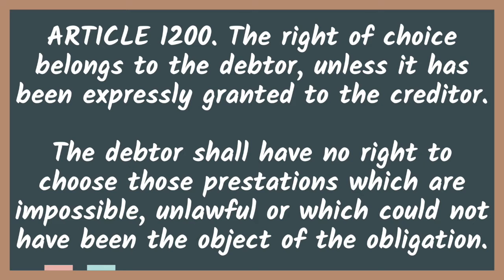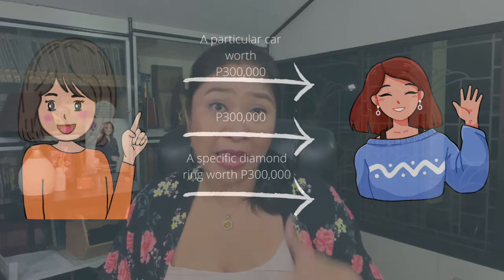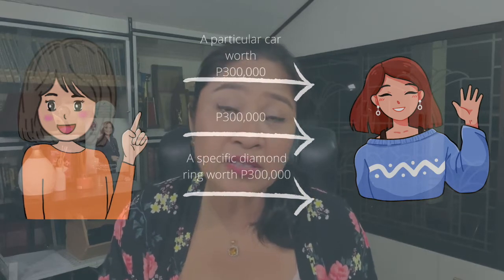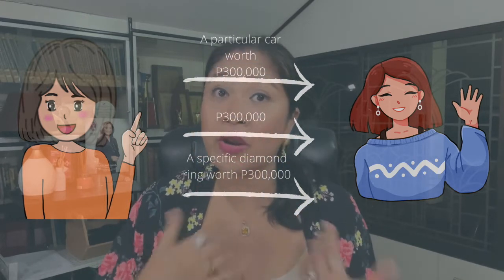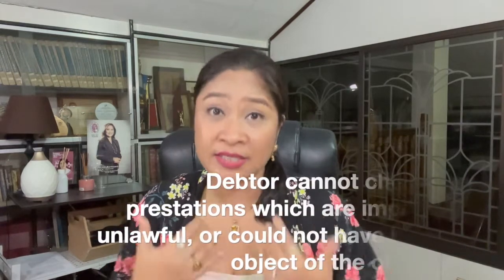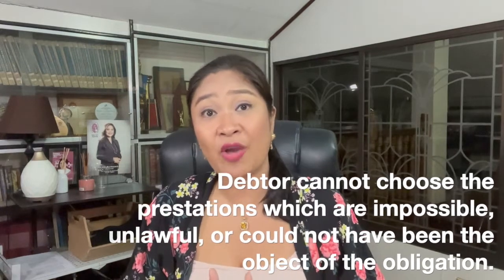The debtor shall have no right to choose those prestations which are impossible, unlawful, or which could not have been the object of the obligation. So in our previous example, Betty now has the right to choose which of the prestations she will fulfill — either she will deliver that particular car worth 300,000, or the 300,000 cash, or the 300,000 diamond ring. The general rule is the debtor has the right of choice, unless they have agreed that the creditor will have the right to choose which prestation he will be asking the debtor to deliver.